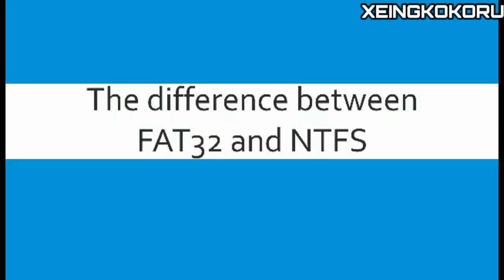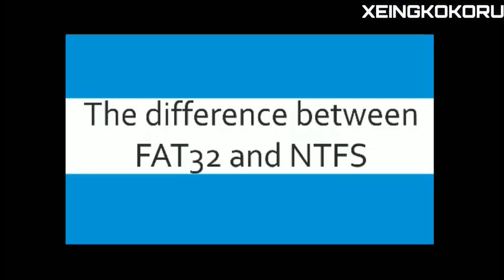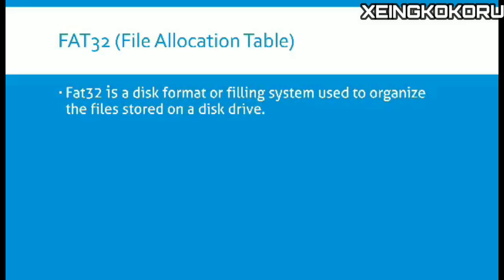We can now move on to the difference between FAT32 and NTFS. For FAT32, also known as File Allocation Table, FAT32 is a disk format or file system used to organize the files stored on a disk.